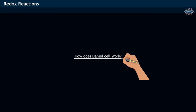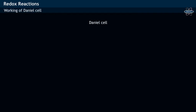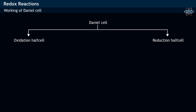How does a Daniell cell work? Daniell cell consists of two half cells: oxidation half cell and reduction half cell.